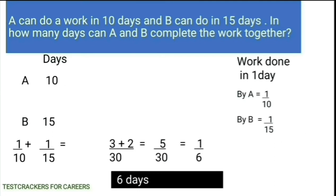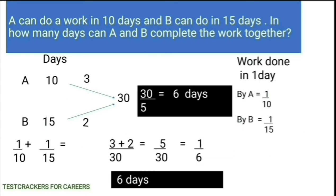Let's solve it by finding the LCM of 10 and 15, which is 30. So 30 units of work has to be completed by A and B. In 1 day, A can do 3 units of work and B can do 2 units of work. Totally A and B can do 5 units of work. They have to complete 30 units of work, so they will take 6 days to complete 30 units of work.